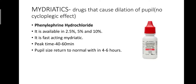Mydriatics are drugs that cause dilation of the pupil and have no cycloplegic effect. Phenylephrine hydrochloride is an example, available in 2.5%, 5%, and 10% concentrations. It is a fast-acting mydriatic with a peak time of 40 to 60 minutes, and the pupil returns to normal size after 4 to 6 hours.